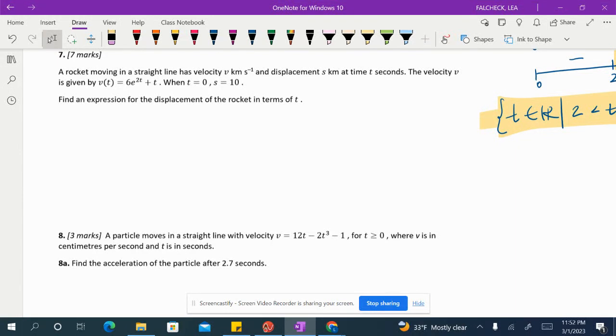All right, number seven. A rocket moving in a straight line has velocity V kilometers per second and displacement S kilometers at time T seconds. The velocity V is given by V(T) equals 6e^(2T) plus T. And when T equals zero, S equals 10.